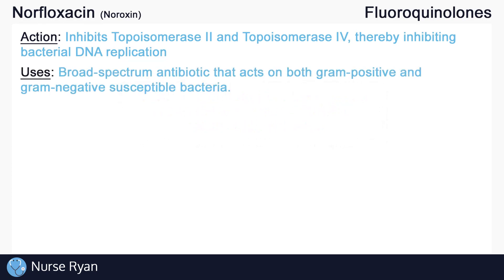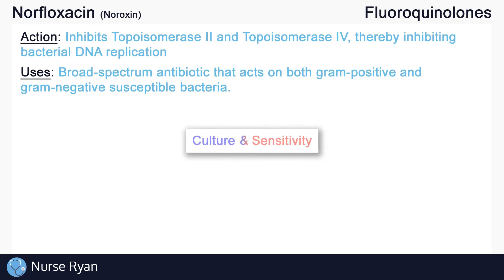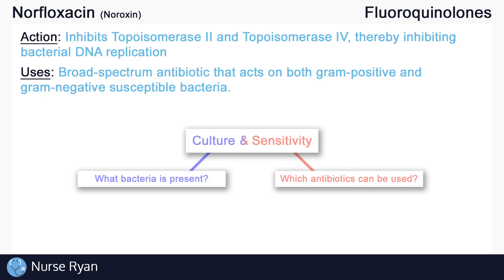So what type of bacteria can fluoroquinolones like norfloxacin work on? Norfloxacin is a broad-spectrum antibiotic, which means that it can act on a wide variety of bacterial infections. This includes both gram-positive and gram-negative susceptible bacteria. To find out which bacteria are susceptible to norfloxacin, a culture and sensitivity test should be performed. The culture test can tell us what bacteria is present in a given sample, and the sensitivity test can tell us which antibiotics will likely work best to treat the infection.